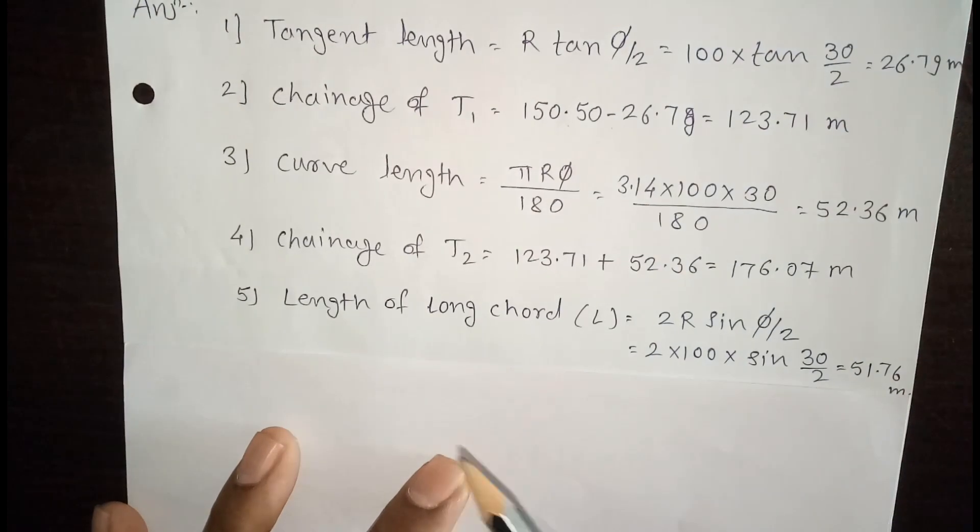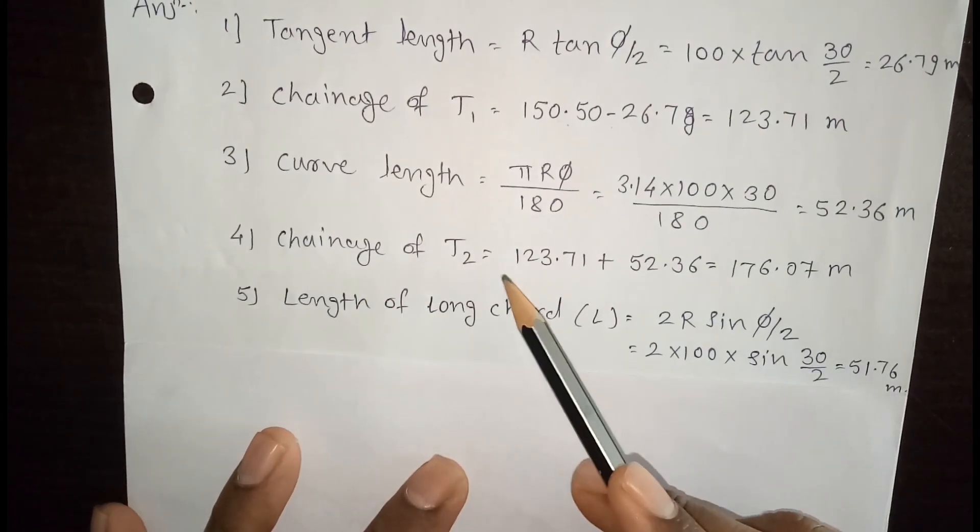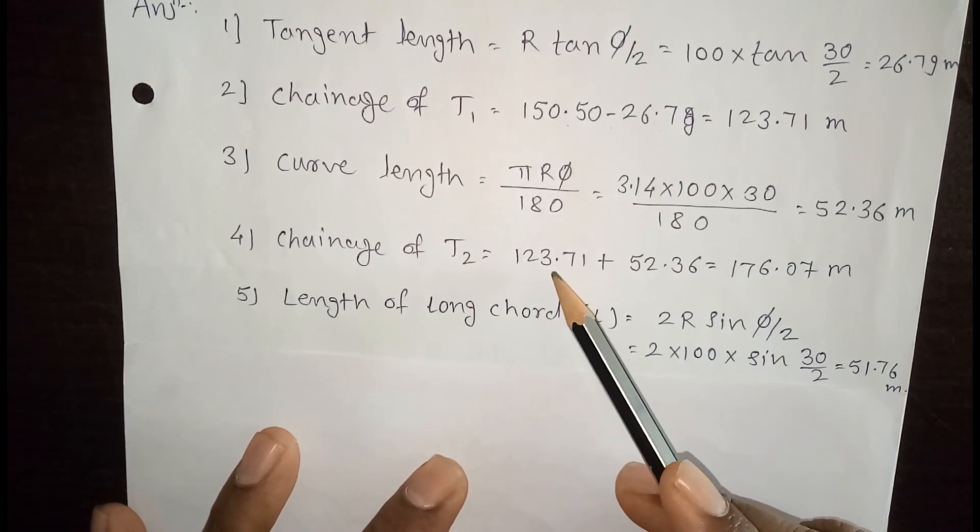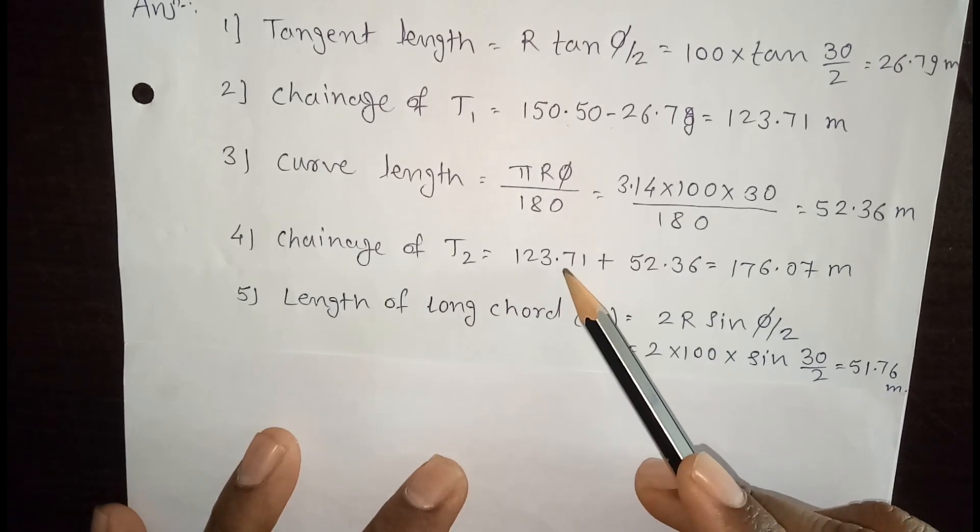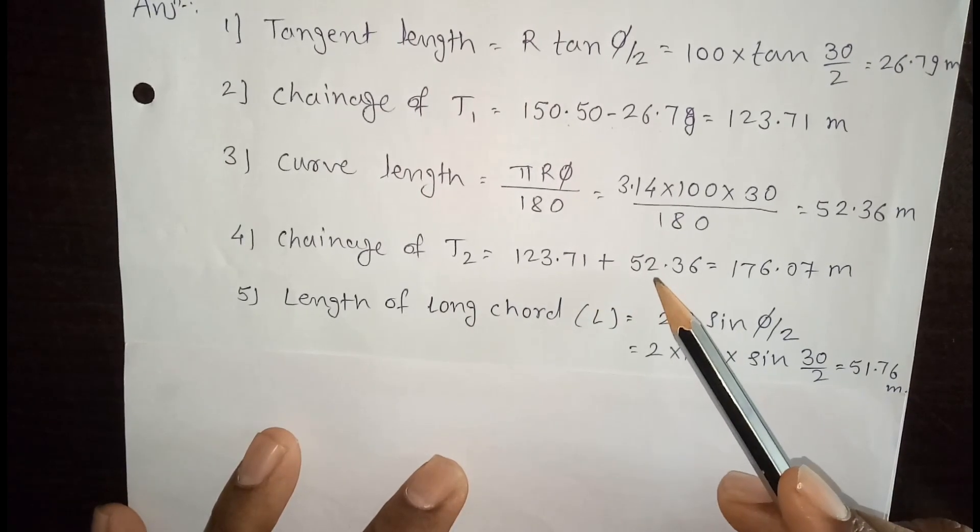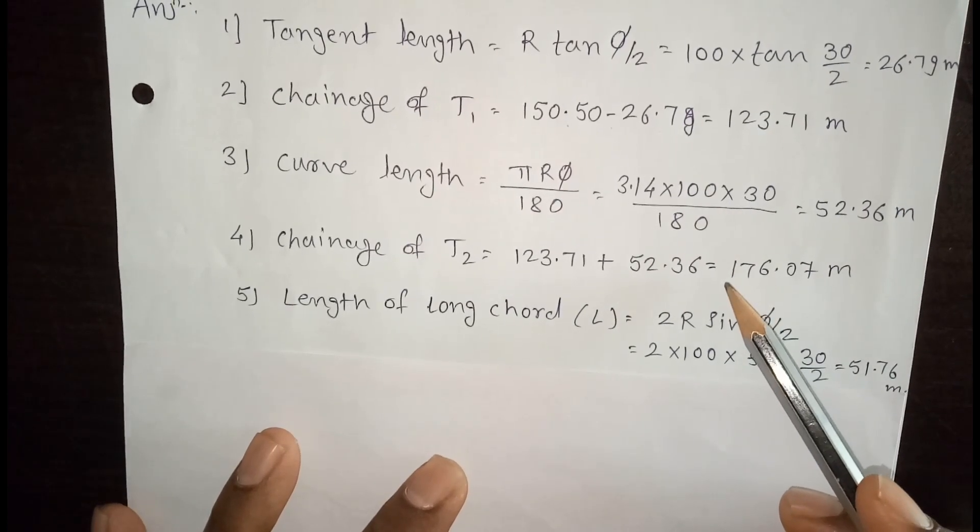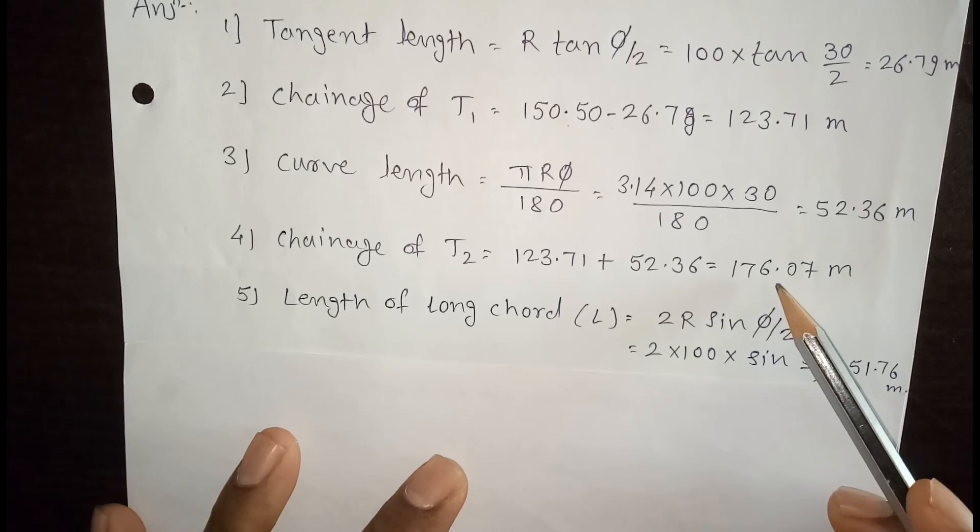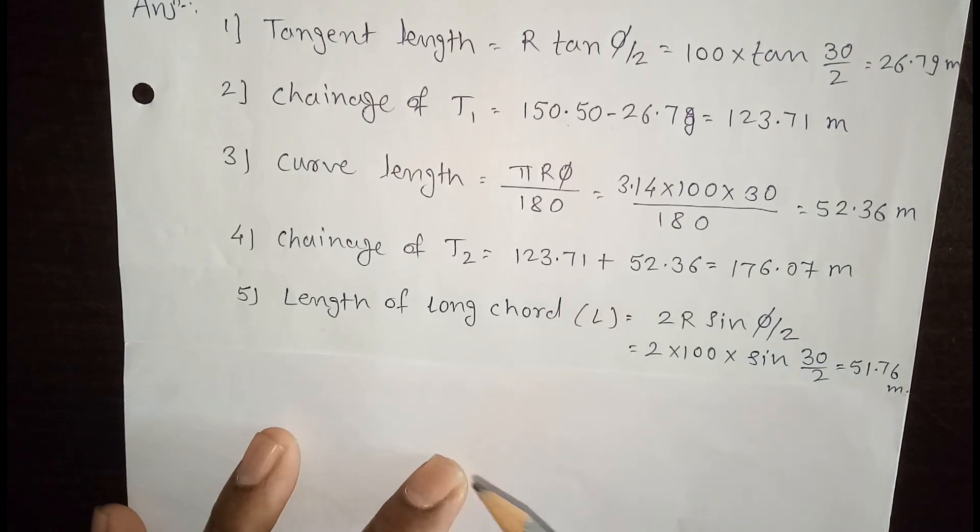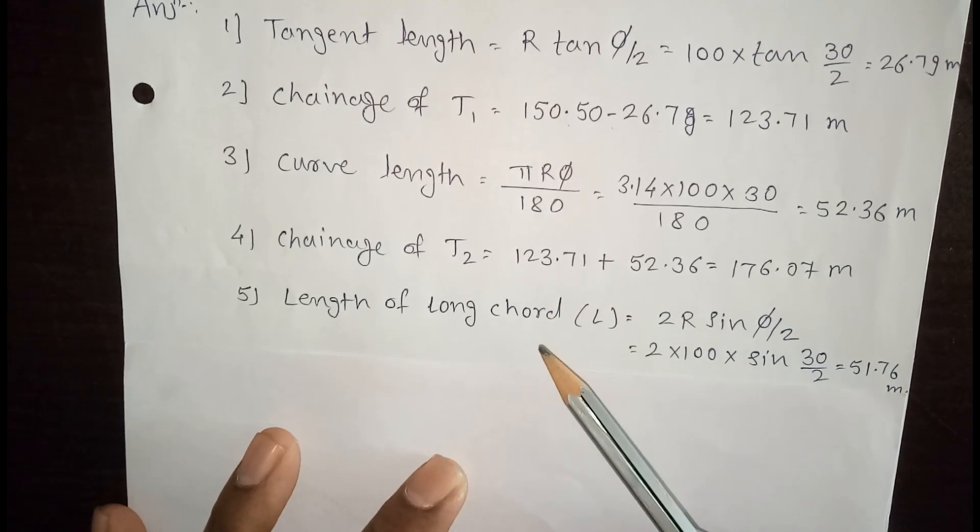Now chainage of T2. Chainage of T2 is equal to chainage of T1 plus curve length. So chainage of T1 is 123.71 plus curve length is 52.36. So chainage of T2 is 176.07 meter.